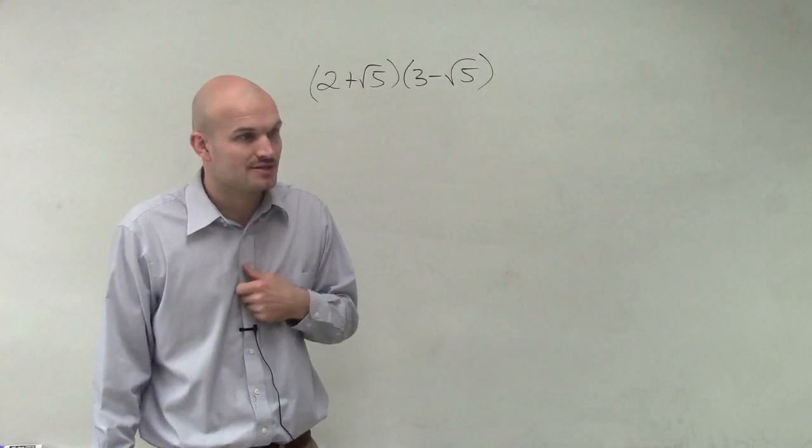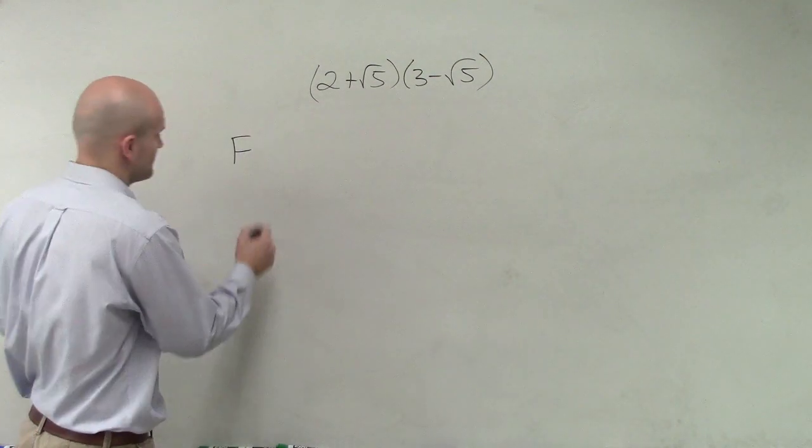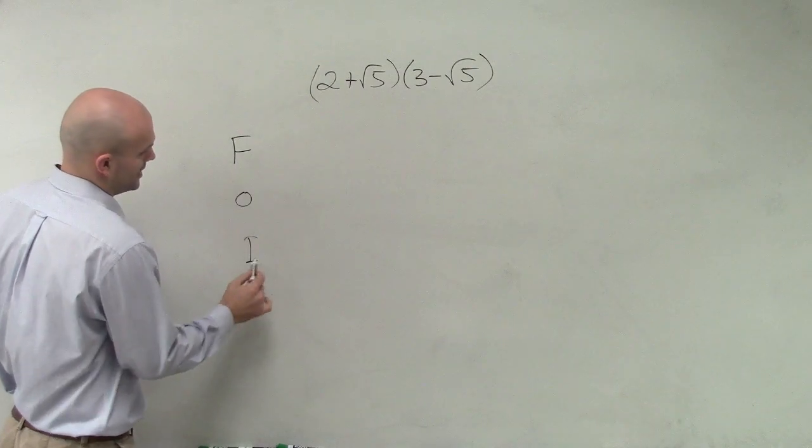And remember, when multiplying binomials, we have to make sure that we follow along with the FOIL process. So the FOIL process says first, outer, inner, last.